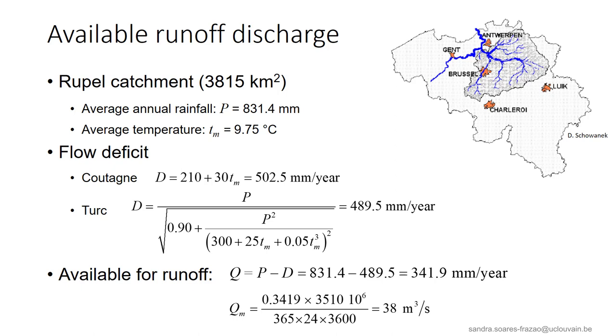Let us apply all this to an example. Here, the Ruppel catchment that is located in the north of Belgium. The catchment is 3815 square kilometers. It has an average temperature of 9.75 degrees and an average annual rainfall of 831.4 millimeter. We can calculate the flow deficit according to the formulations of Turk and Coutagne, and we see that the two values are close to each other. From there, we can estimate the quantity of water that is available for runoff and transform it into an equivalent mean discharge. We see here that on average, we can count on 38 cubic meters per second at the outlet of the catchment. Of course, this is an annual mean value that does not take into account any seasonal variability.